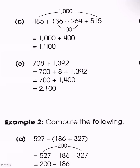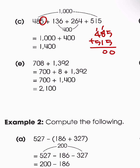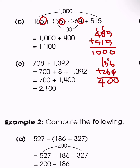Then we have a similar type of problem. Again, we look for ways to group numbers together. Numbers ending with 5 — we add those together, giving us 1,000. Numbers ending with 6 and 4 — we add them together, giving us 400. So 1,000 plus 400 gives us 1,400.